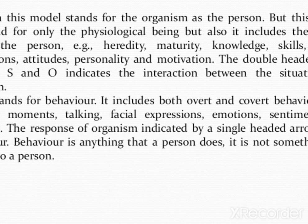The O in this model stands for the organism or person, but this O does not stand for only the psychological being; it also includes the processes within the person — that is heredity, maturity, knowledge, skills, values, perceptions, attitudes, personality, and motivation. The double-headed arrow between S and O indicates the interaction between the situation and organism. The B stands for behaviour. It includes both overt and covert behaviour such as body movements, talking, facial expressions, emotions, sentiments, and thinking. The response of the organism indicated by a single-headed arrow is the behaviour. Behaviour is anything that a person does, because it is not something that is done to a person.